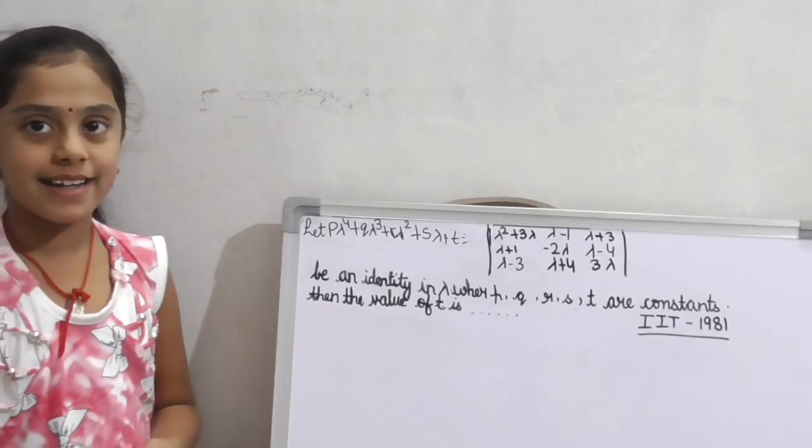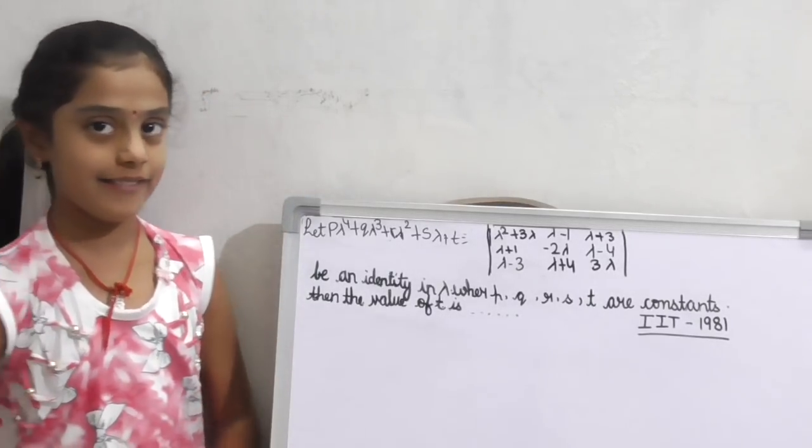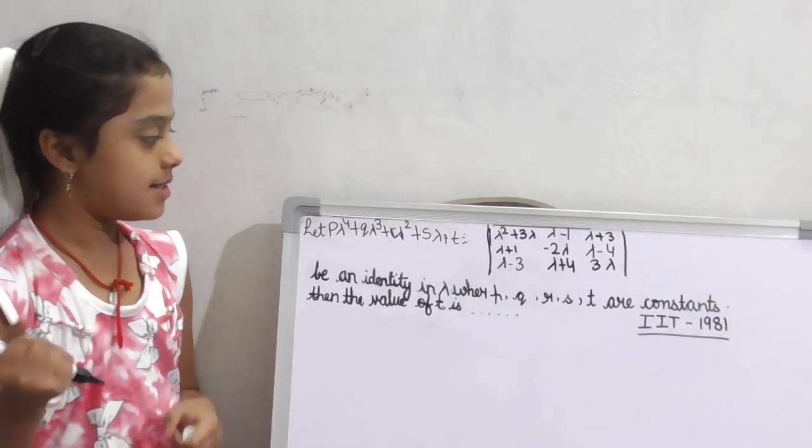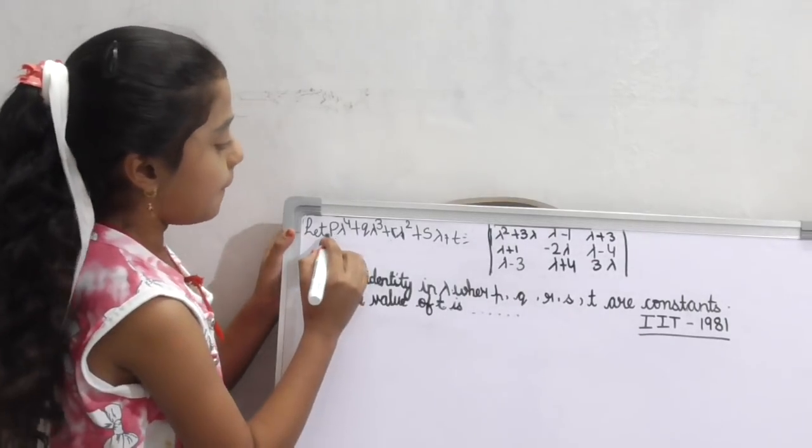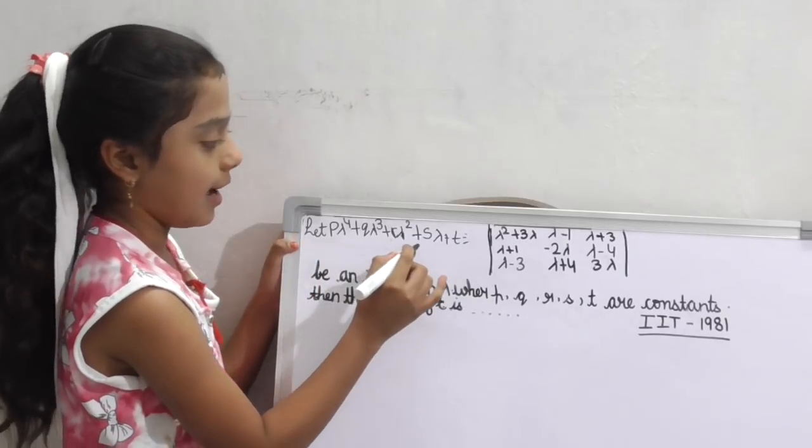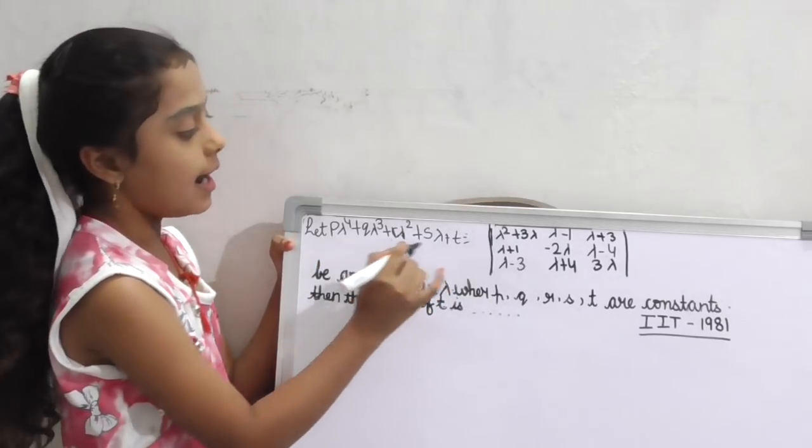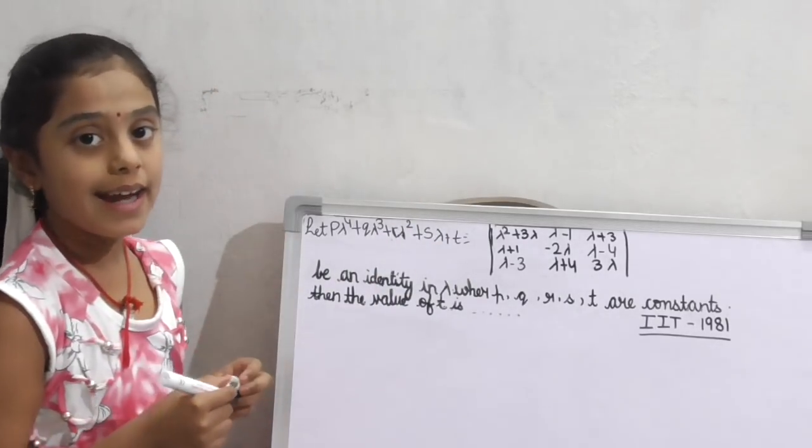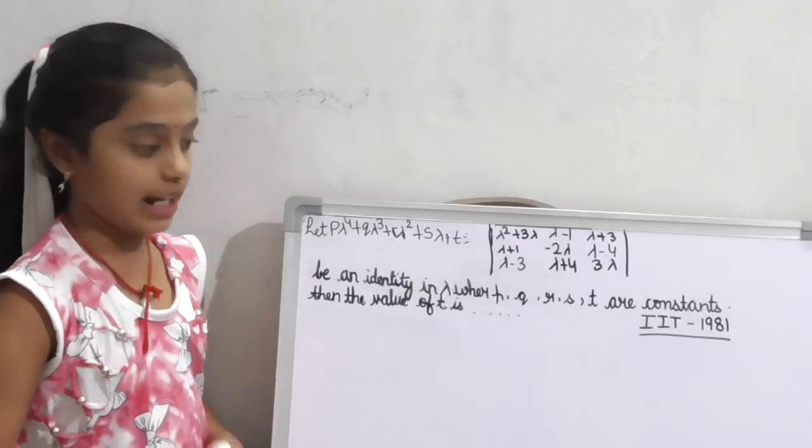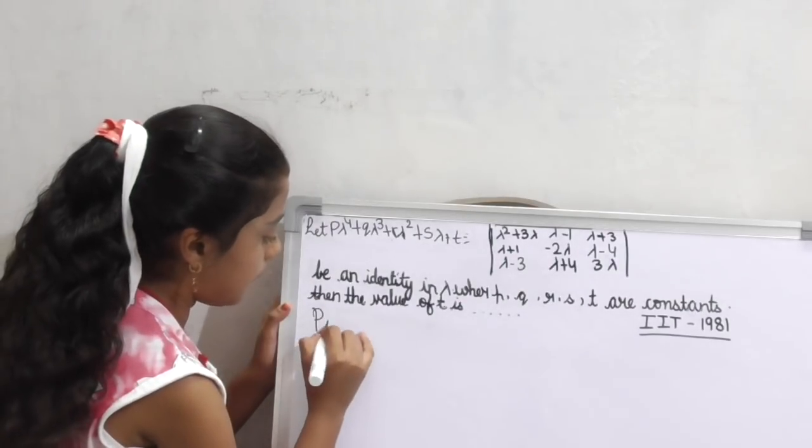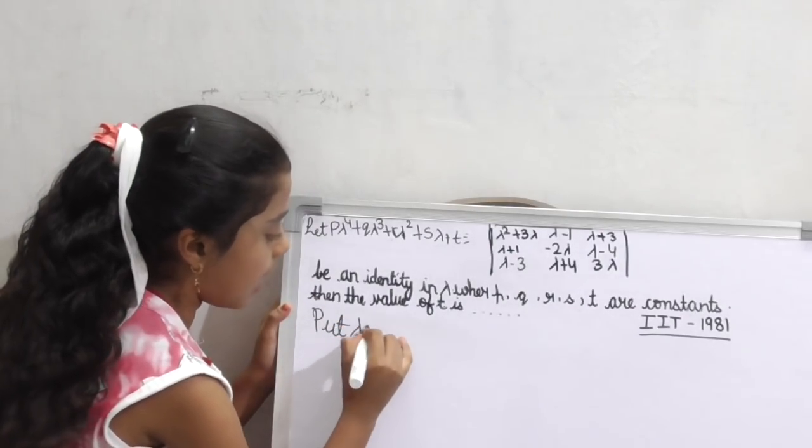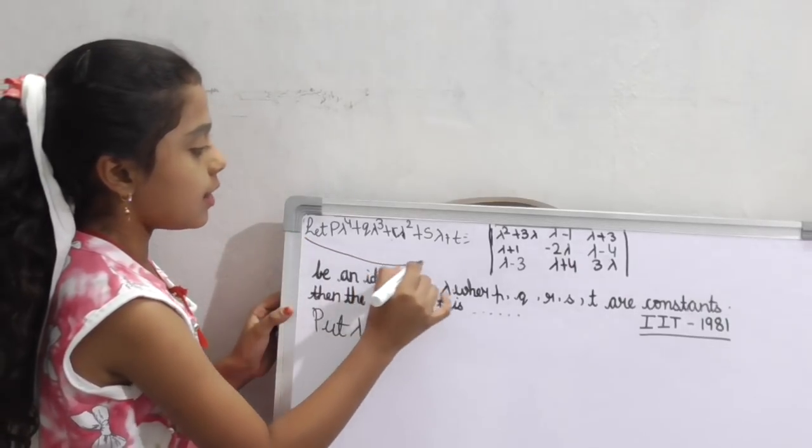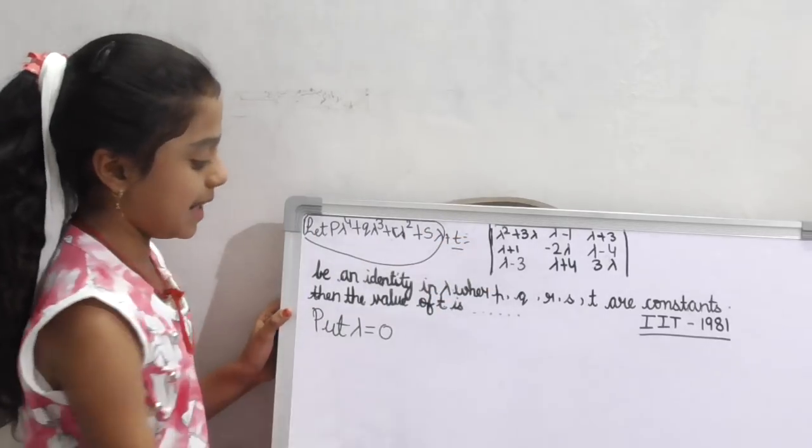This question is from IIT 1981, topic matrices and determinants. Here we have P, Q, R, S with lambda, and T is a constant. To get the value of T, put lambda equal to 0. Here, all these terms are 0 except T.